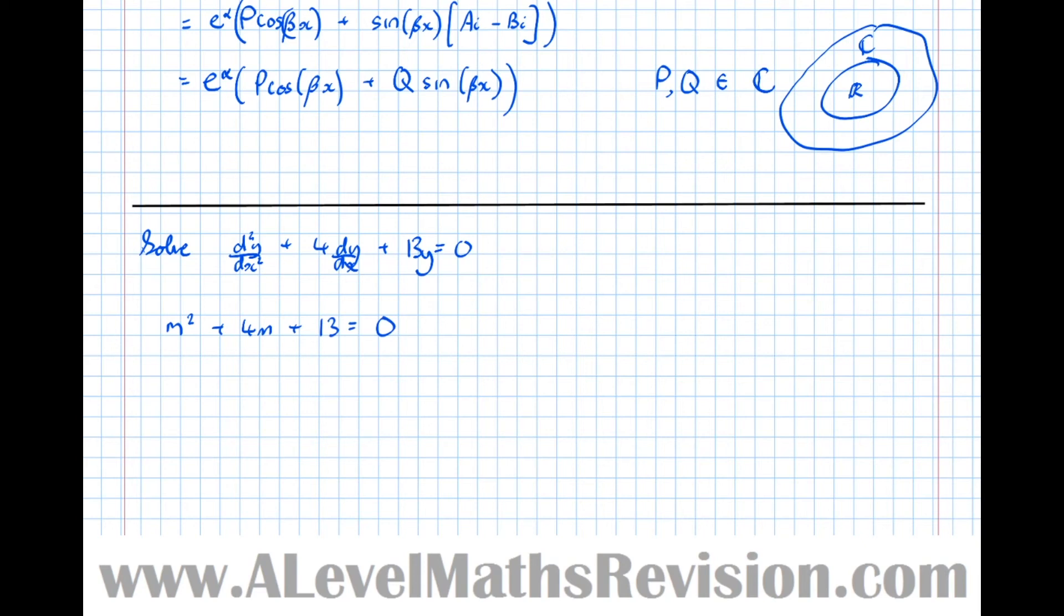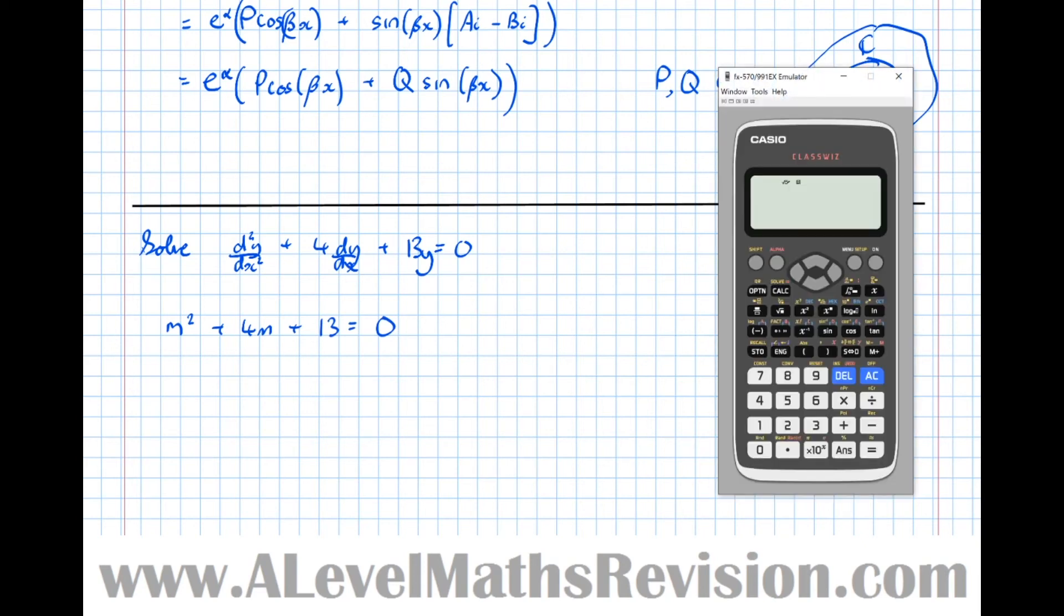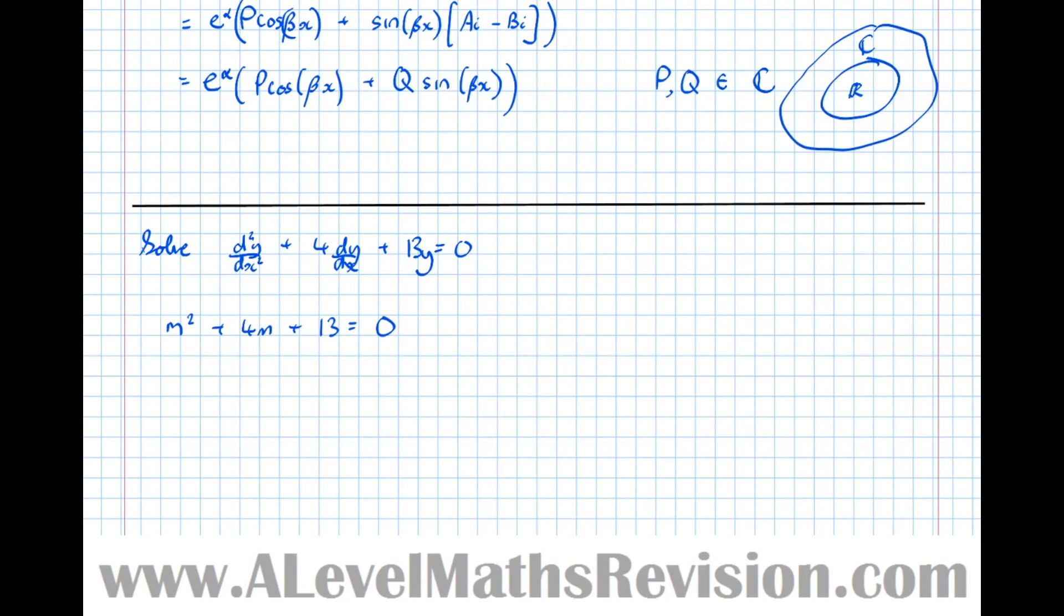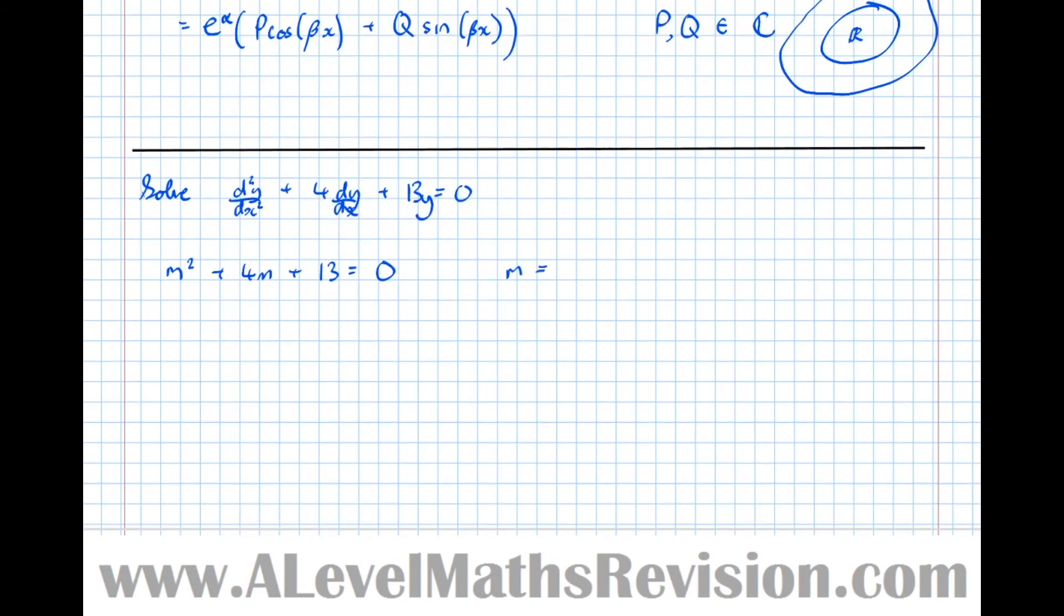m² + 4m + 13 = 0. So we'll not bother using the quadratic formula. We'll put it straight in the calculator for quickness. So if we go to the polynomial solver for a degree 2 polynomial or quadratic, 1m² + 4m + 13 = 0, which means that the solutions to m are α ± βi.